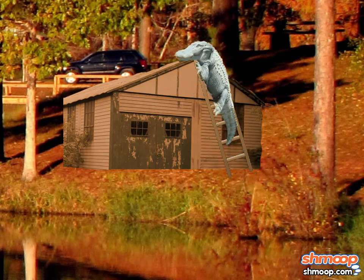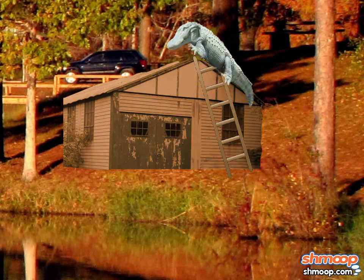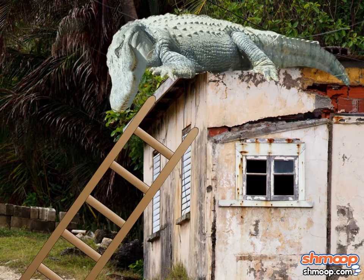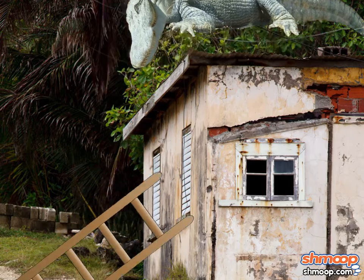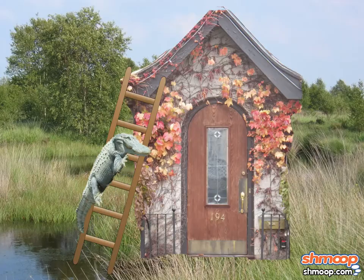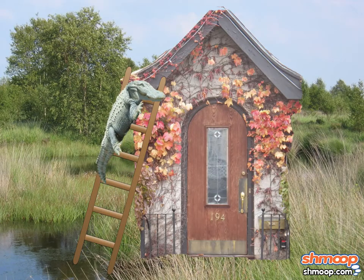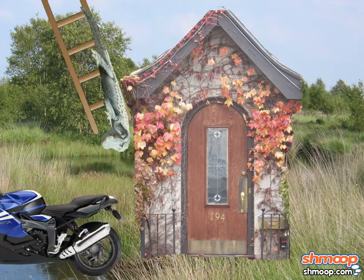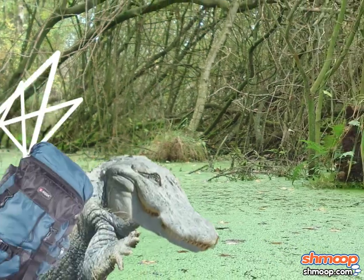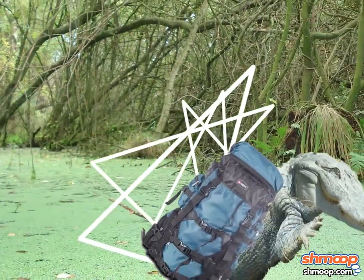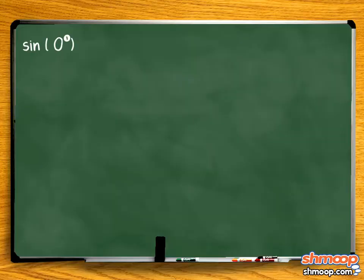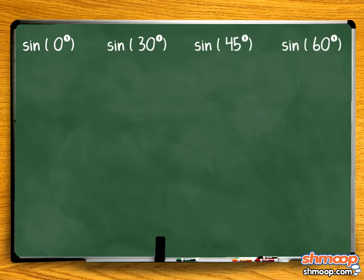Darren decides to check out the sine of other angles of elevation for maybe some other creative jumping ideas. Maybe he can find a slightly taller shack nearby that will be better suited for his record-breaking attempt. He picks a few special angles for sine and tests them out: zero degrees, 30 degrees, 45 degrees, and 60 degrees.